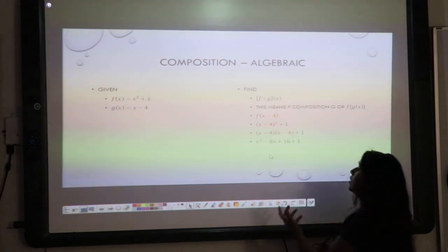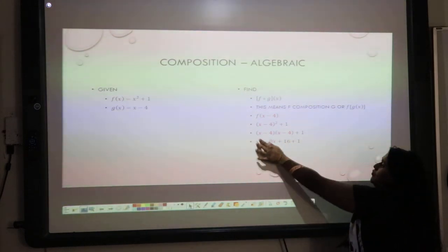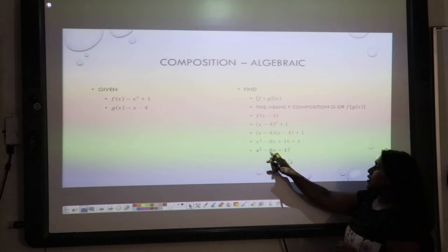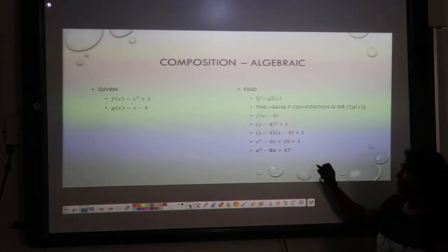We foil it out. And we simplify it down to x squared minus 8x plus 17.